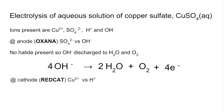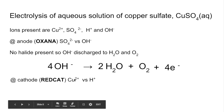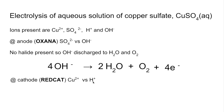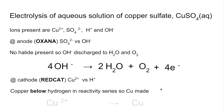At the cathode we have Cu2+ versus H+. Copper is below hydrogen on the reactivity series, so we're going to get copper formed at the cathode. Cu2+ is discharged to make Cu. The atoms already balance, but the charge doesn't — we need to bring the 2 plus down to zero with 2 electrons.